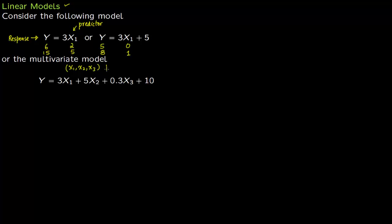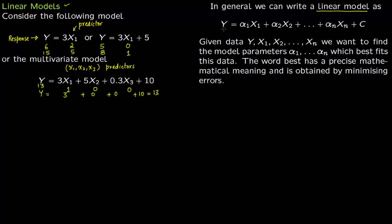All of x1, x2, x3 are predictors and y is the response variable. For example, setting x1=1, x2=0, x3=0 gives y = 3×1 + 5×0 + 3×0 + 10 = 13. These are all linear models — there is no power of x or cross-multiplication of predictors. In general, a linear model is written as y = α1·x1 + α2·x2 + … + αn·xn plus a constant term.